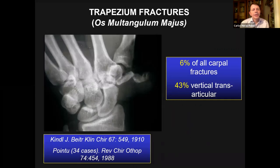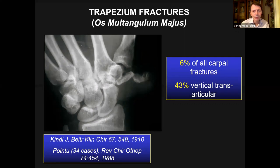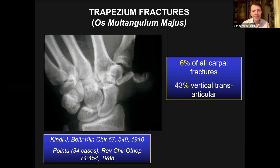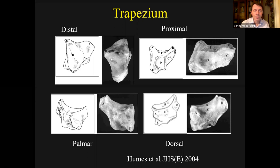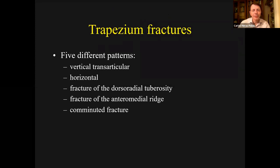The trapezoid means a polygon with four sides, and the name means different things in British English versus American English, which gets confusing. But basically, fractures of the trapezoid are about 6% of carpal fractures, and most of them are vertical transarticular. If you want to read more about the trapezoid, there's an interesting paper by Humes et al. 2004, with senior author Jonathan Comson, who has also done a lot of work on the anatomy of the trapezoid. There are five different patterns of trapezoid fractures, with the commonest being vertical transarticular.